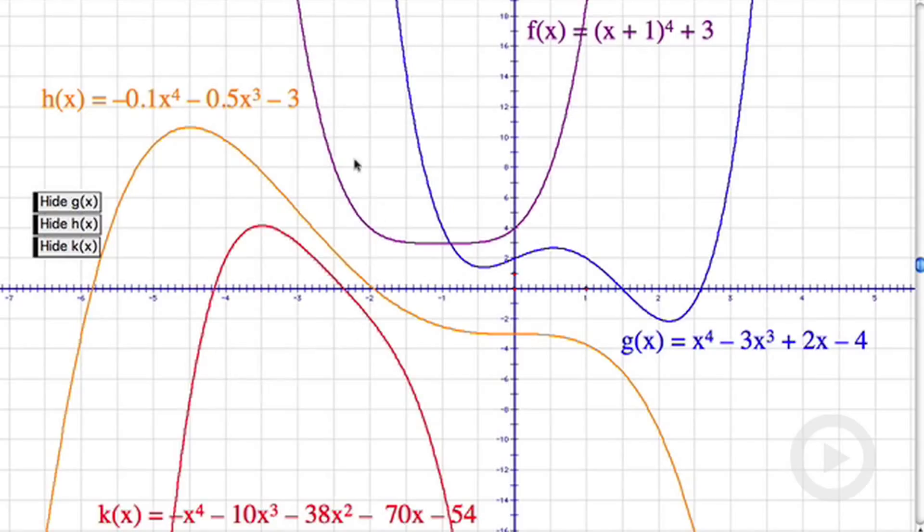And notice that their end behavior, both ends do the same thing. In this case, the left and right sides go up on the purple graph. In the blue one, both ends go up. But in the orange and red ones, both ends go down. So whatever the right end does, the left end also does. That's important for fourth degree polynomials.